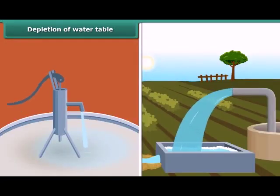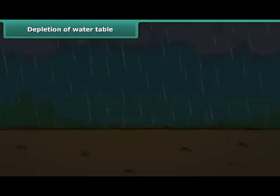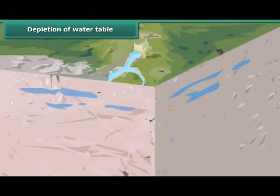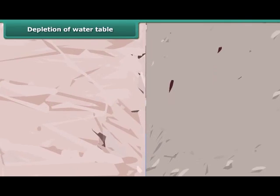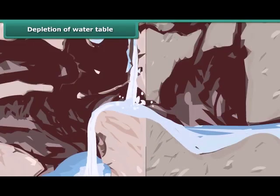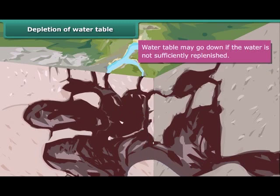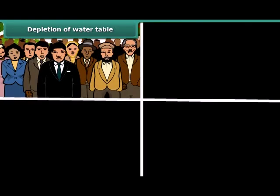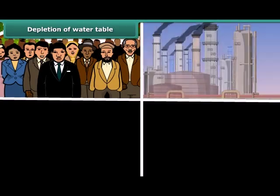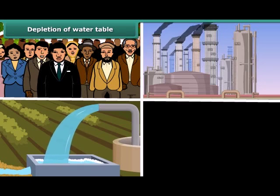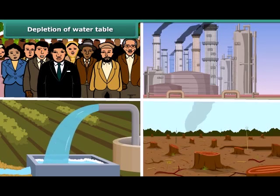Water drawn from the ground water gets replenished by seepage of rain water. The water table does not get affected as long as we draw as much water as is replenished by natural processes. However, water table may go down if the water is not sufficiently replenished. This may happen due to many factors such as increasing population, rapid growth of industries, agricultural activities, scanty rainfall and deforestation.